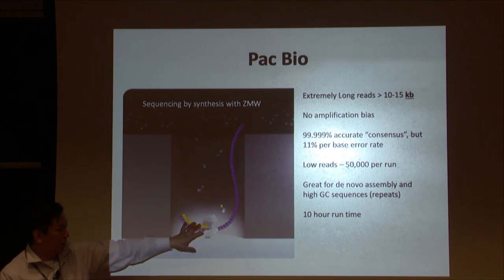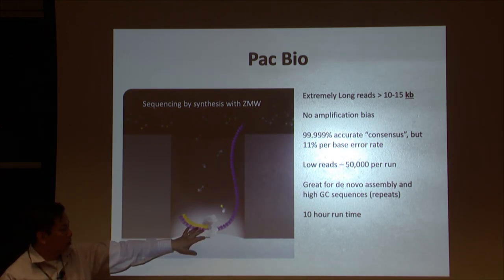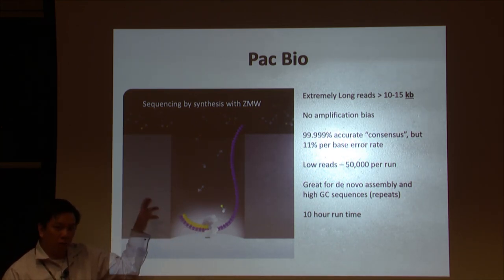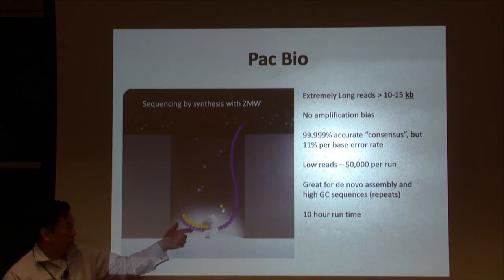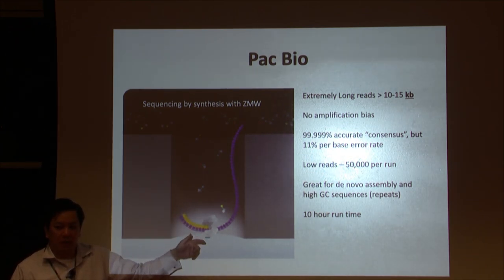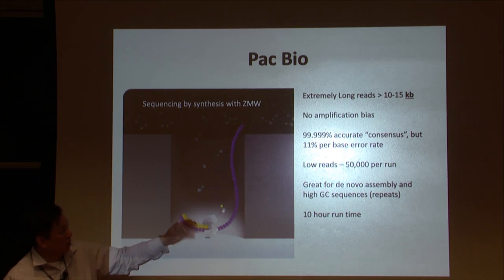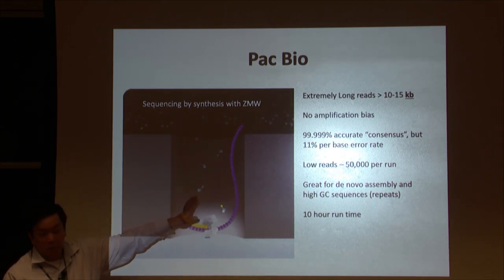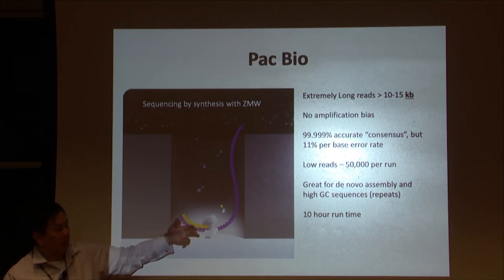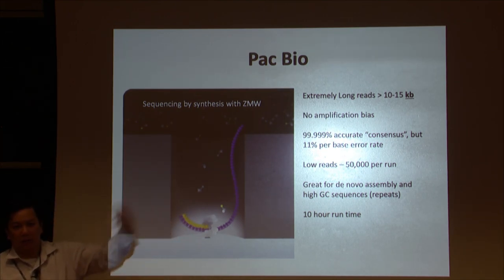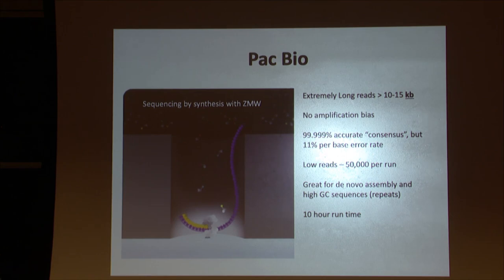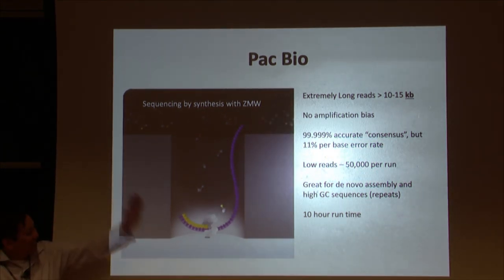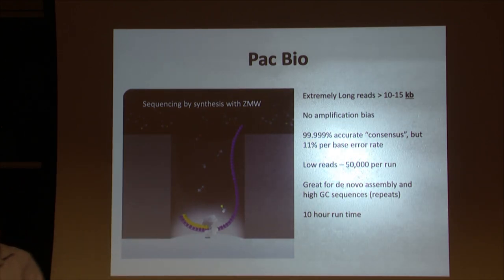They claim you can get around the high error rate by sequencing the same strand over and over again. The chance you'll have the same error at the same base twice is diminished - it's 11 percent per base, so seeing the same error twice is 11 percent squared, third power, fourth power. It's an interesting platform because it does something different from the others.